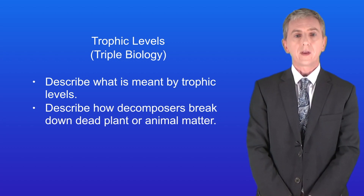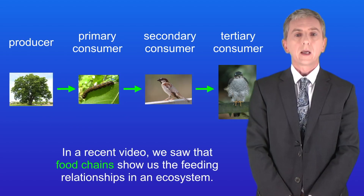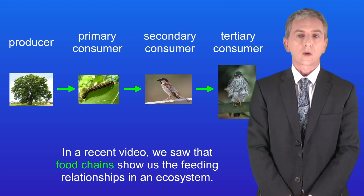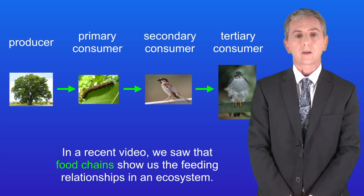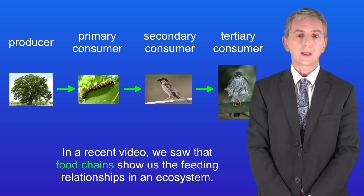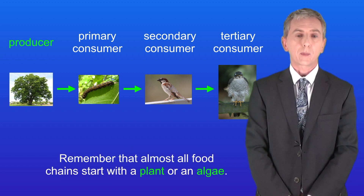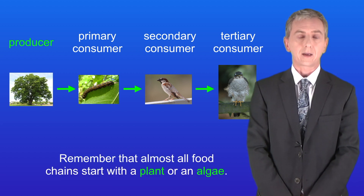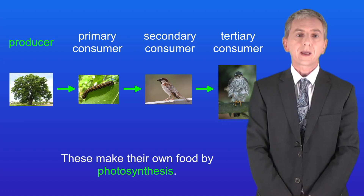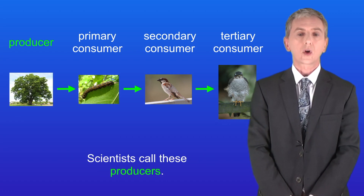This is for triple biology students only. In a recent video we saw that food chains show us the feeding relationships in an ecosystem. Remember that almost all food chains start with a plant or an algae. These make their own food by photosynthesis and scientists call these producers.